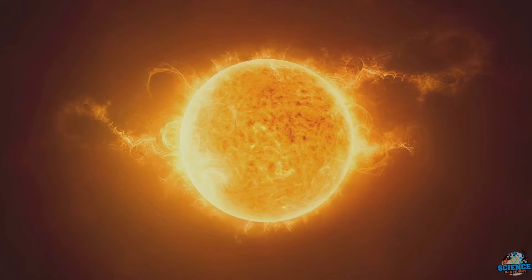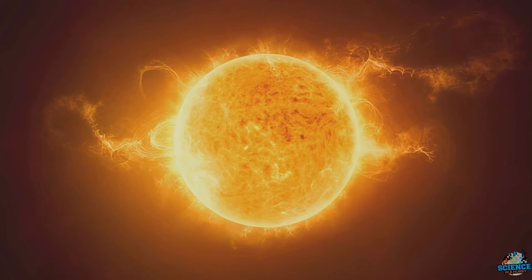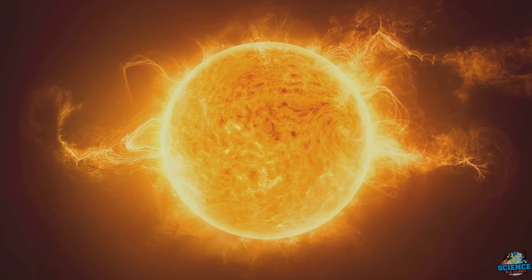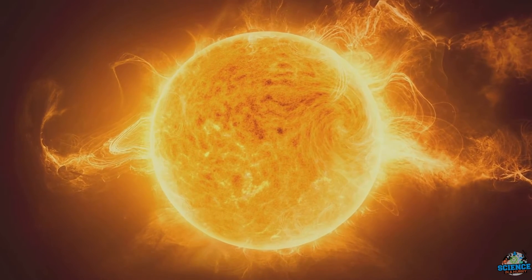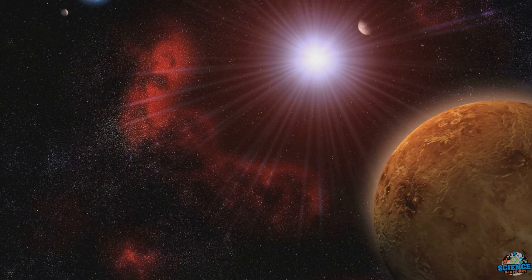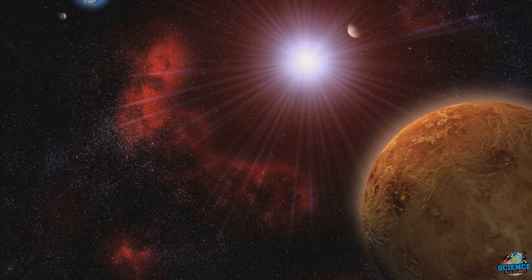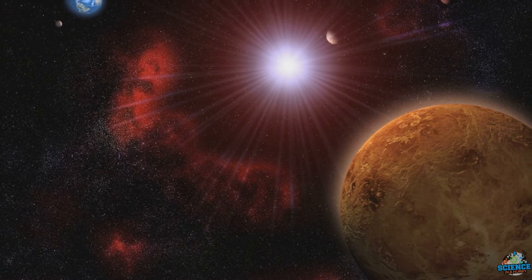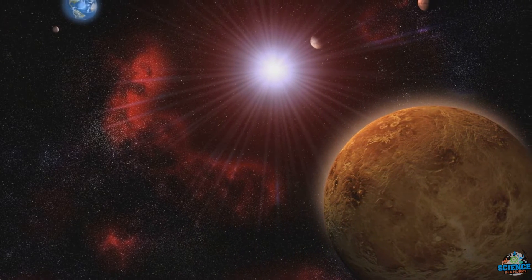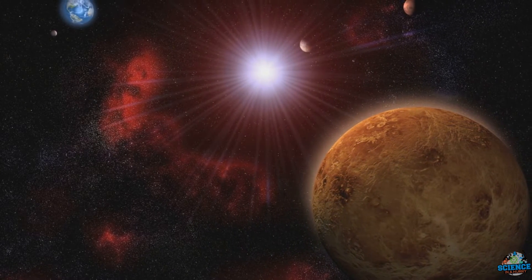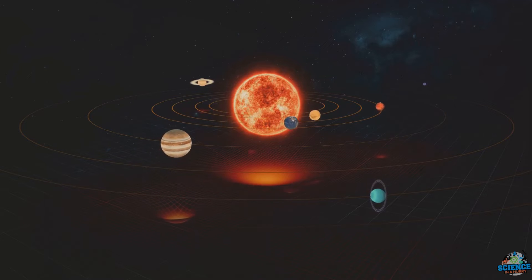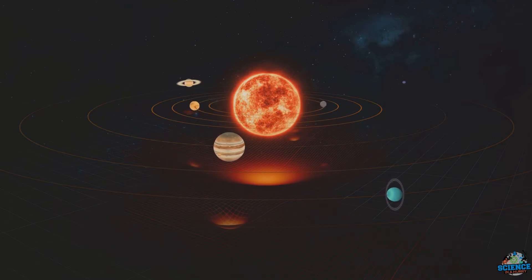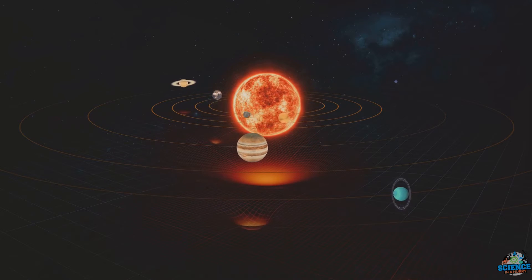Next, we have the tidal friction theory. This theory proposes that Venus initially spun in a prograde rotation, the same way Earth does. But the Sun's immense gravitational pull gradually slowed Venus down, eventually stopping it and causing it to start rotating in the opposite direction. It's a bit like trying to cycle uphill — at some point, you might find it easier to turn around and go downhill instead. Yet the exact mechanics of this process remain elusive, considering only Venus was affected and not the other planets in the solar system.